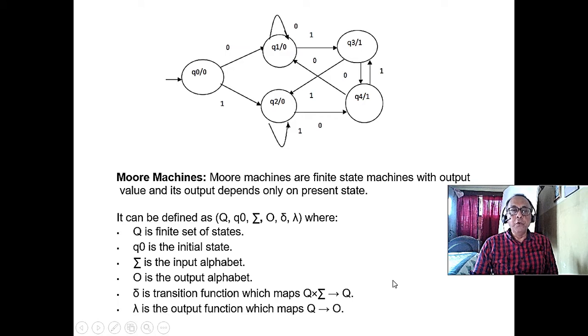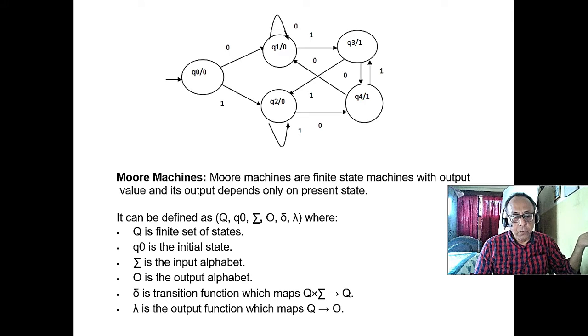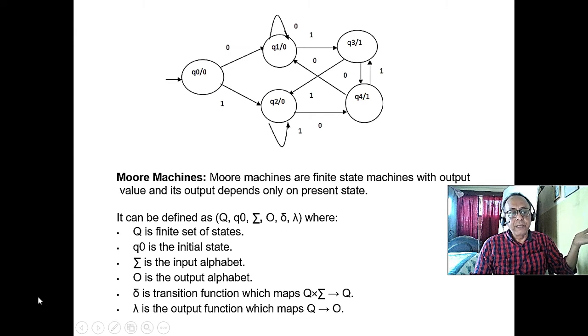Another kind of machine is the Moore machine. Moore machine gives output not per transition, it gives the output per state. Same, here also six tuple, here also Q_0 initial state and output, and here lambda is the output function. Here, in Mealy, we have used O, another thing we can use is lambda.